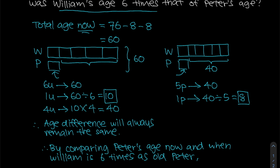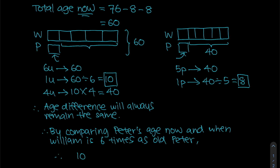Peter is now 10 years old. Only when Peter was 8 years old would William's age be six times that of Peter's age. So we take 10 minus 8 to get 2. The answer is two years ago.